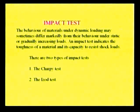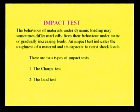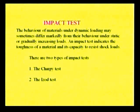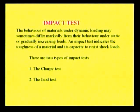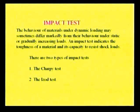The next test is the impact test. The behavior of materials under dynamic loading may differ markedly from their behavior under static or gradually increasing loads. In gradually applied loading, the load increases from 0 to a maximum value; in suddenly applied loading, the same load is applied at once; in impact loading, the load is dropped from some height, so the intensity depends upon the height from which it is dropped. If dropped from 5 meters, the effect is different from when dropped from 10 meters — the height from which the load is dropped is the main criterion in the impact test.